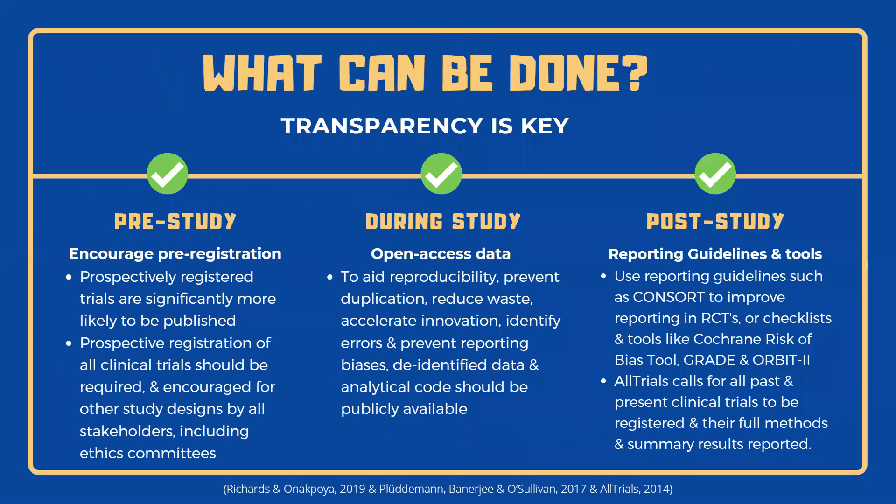So how can this be avoided? Transparency is the most important action to safeguard health research. Pre-study, prospective registration of all clinical trials should be required, and encouraged for other study designs, by journal editors, regulators, ethics committees, and sponsors, to curtail bias and to increase the likelihood of publication. During the study, transparent science practices should be utilised, such as making code and de-identified data publicly available, as this practice aids reproducibility, prevents duplication, reduces waste, accelerates innovation by quickly identifying errors, and prevents reporting biases.